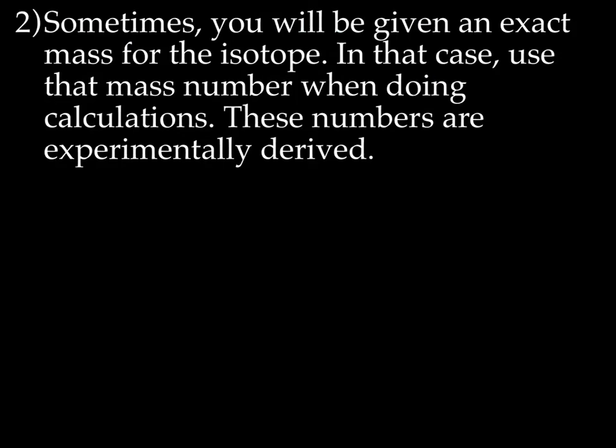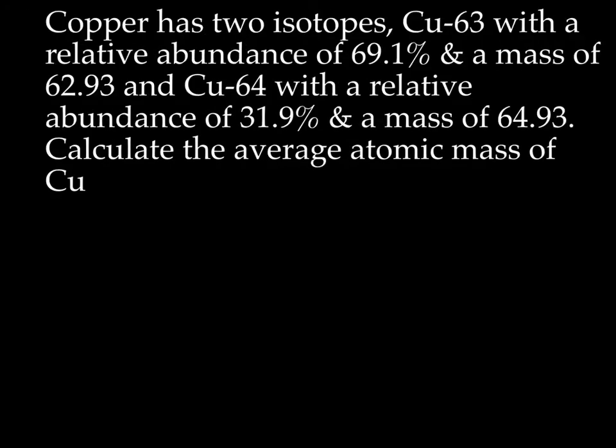All right, let's try another one. But first, I want to point out that sometimes you'll be given an exact mass for the isotope, and in this case, use that mass when doing calculations, because these numbers were experimentally derived. So they're very precise. All right, so let's try one like that. So now we have copper that has two isotopes. We've got copper 63 with a relative abundance of 69.1%. But now they know the exact mass of this copper 63, which is actually 62.93. So we're going to use that number instead of the copper 63. And we have copper 64 with a relative abundance of 31.9% and a mass of 64.93. So we're going to use the 64.93. All right, so now, why don't you hit pause? Try to do this without me and see how you do.